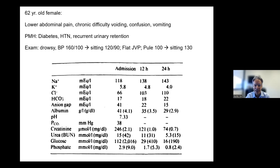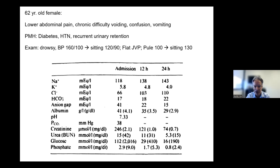We look at the change in bicarbonate from its original level. We don't know the original, but for a female we assume it's 23, so bicarbonate fell by about six. If it's a compensated metabolic acidosis, the PCO2 should fall by about the same amount. But the PCO2 is around 38 — normal for a female — so the PCO2 didn't change.